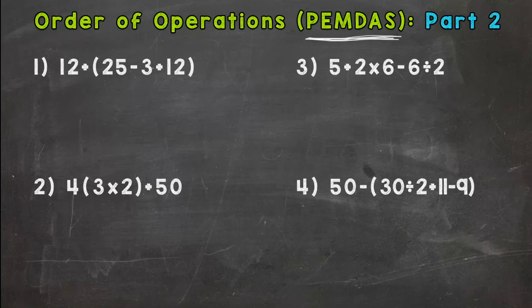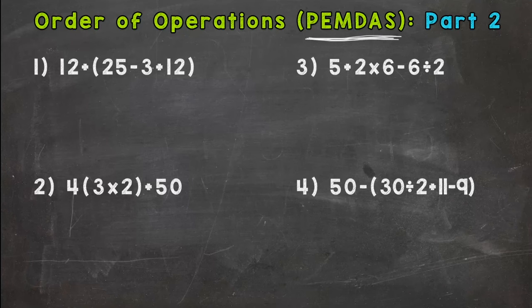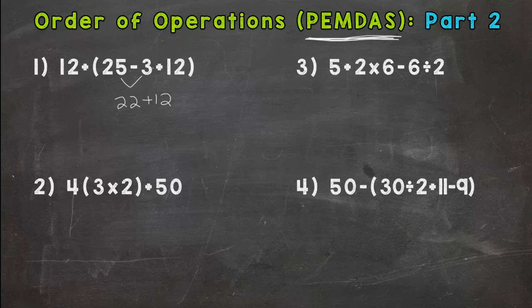Our first step is always anything in parentheses, so we're going to look at 25 minus 3 plus 12. Our options are subtraction or addition. Addition and subtraction are both at the bottom of our order of operations, so we go left to right because they hold the same weight. We do subtraction first: 25 minus 3 is 22. Bring down everything we didn't use and keep the parentheses — you only get rid of them when you've used up every operation inside.